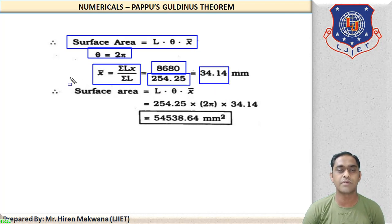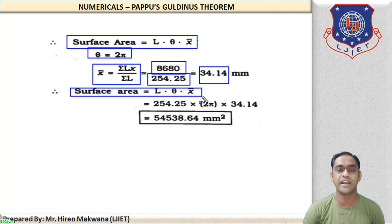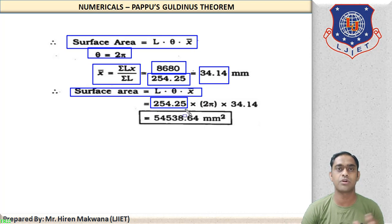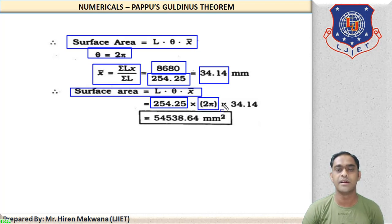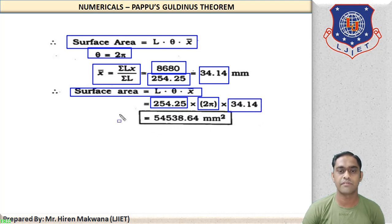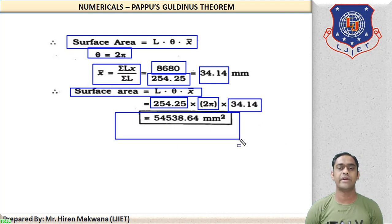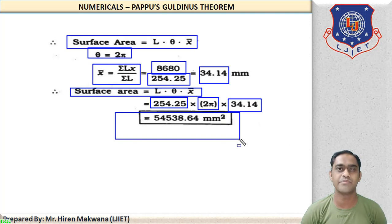Calculating surface area: Total length ΣL = 254.25 mm, θ = 2π, and X̄ = 34.14 mm. So surface area = 254.25 × 2π × 34.14 = 54,538.64 mm².